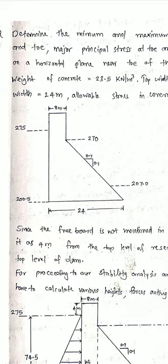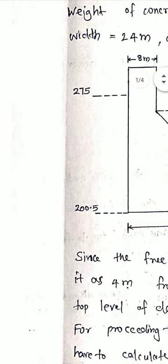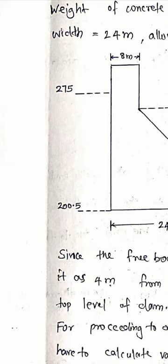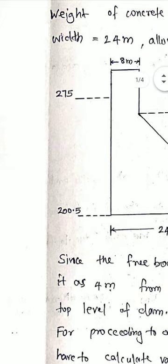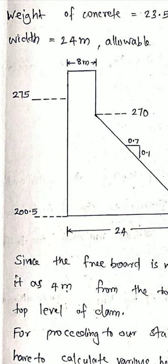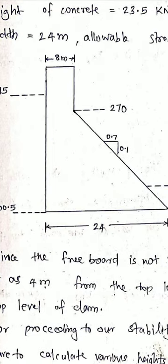On the upstream side, the bottom level is 200.5. The upstream side bottom level is 275. This figure is a practical profile. If we have a triangular profile, we have a practical profile.